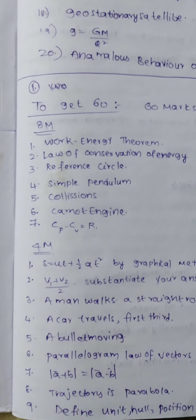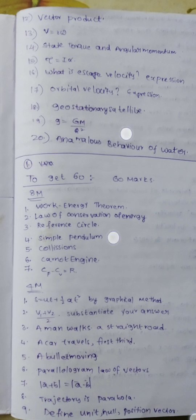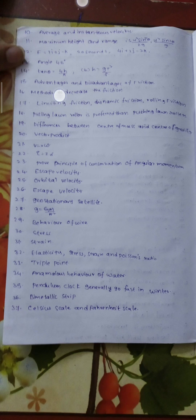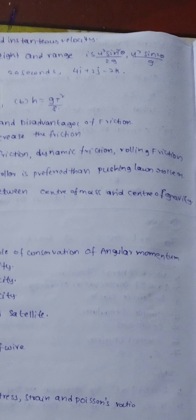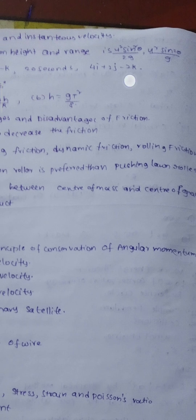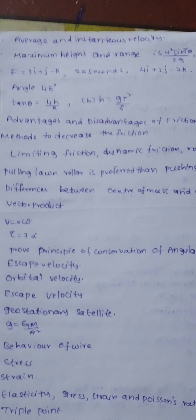The 6th question is the parallelogram law of vectors. The 7th question: modulus of A+B equals modulus of A−B, prove it — that's 90 degrees. Next, the trajectory is a parabola. Then, define unit vector and null position vector — that's the 4th question. The 5th question covers maximum height and range: u²sin²θ/g and u²sin2θ/g. Average and instantaneous velocity is a 2-mark topic.